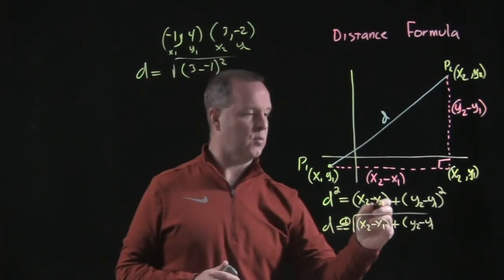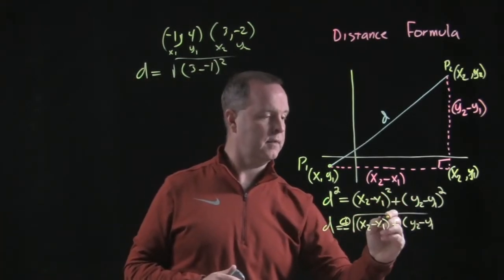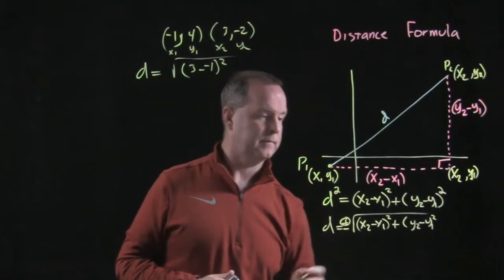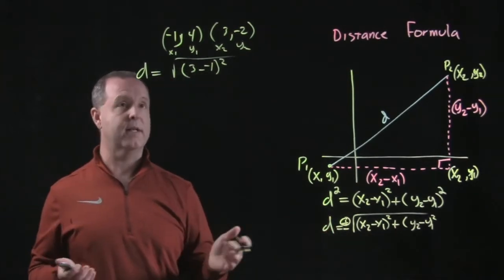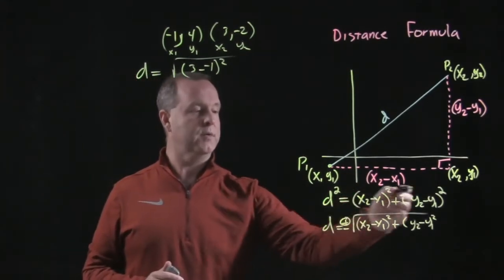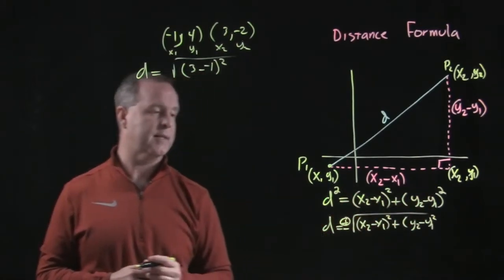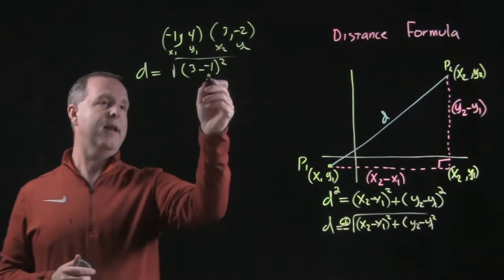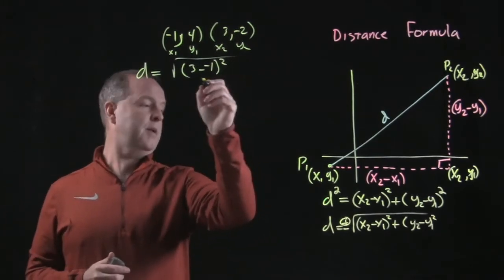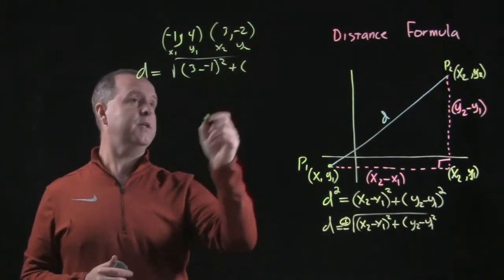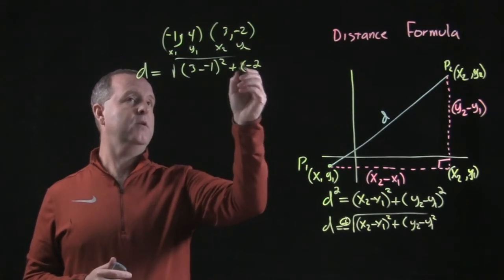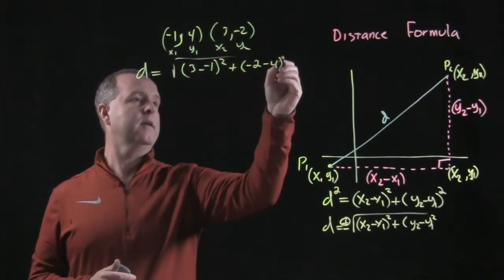I dropped the squared, all those were squares. That was close, I knew there was something going on. So I took the square root of everything, the squares don't eliminate, they're still trapped inside. So I have 3 minus negative 1 squared plus y2, negative 2, minus y1, 4, squared.